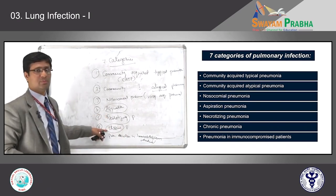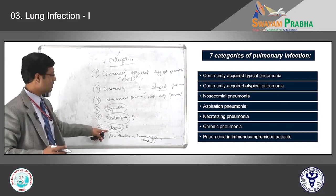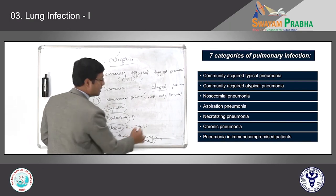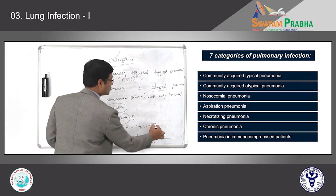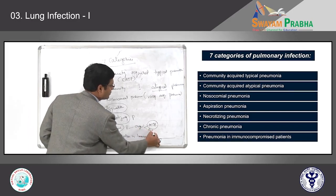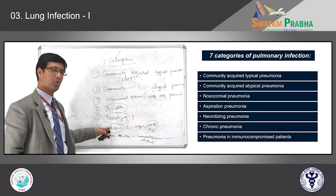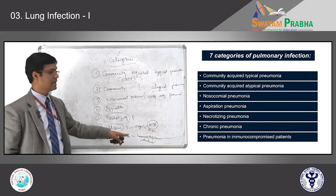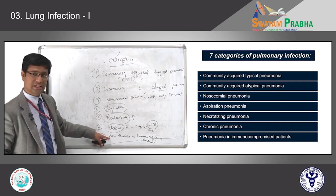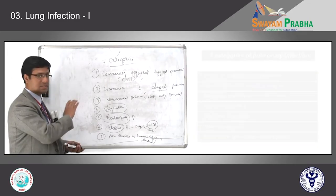Chronic pneumonias occur over a long duration — that is why they are called chronic pneumonia. Only certain organisms are more prone to cause chronic pneumonia. In Indian setup, Mycobacterium tuberculosis (TB) is one of the most common, along with fungal infections. The last category — pneumonia in immunodeficiency individuals — is very important because the organisms causing pneumonia in these patients will not cause any lung infection in healthy individuals.